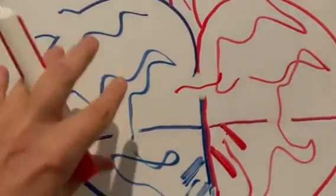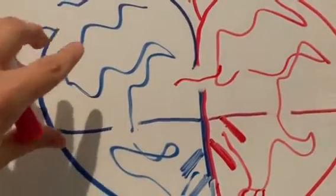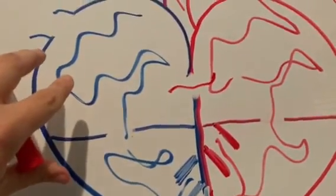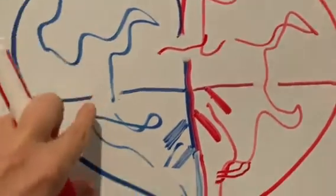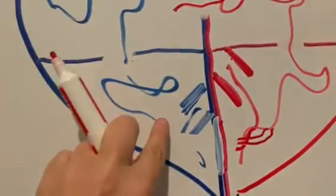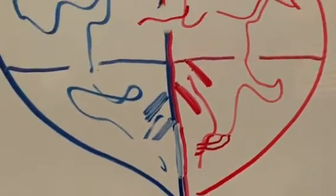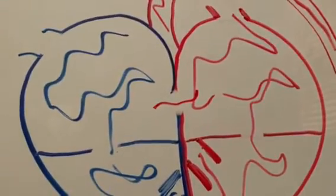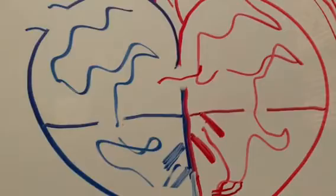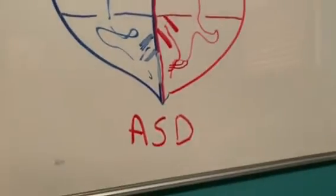This will increase the amount of blood flow in the right side of the heart. Where does that blood flow end up going? So there's more blood flow here. It ends up going through the ventricles into the pulmonary artery, which leads to the lungs. So that's how an atrial septal defect increases pulmonary blood flow.